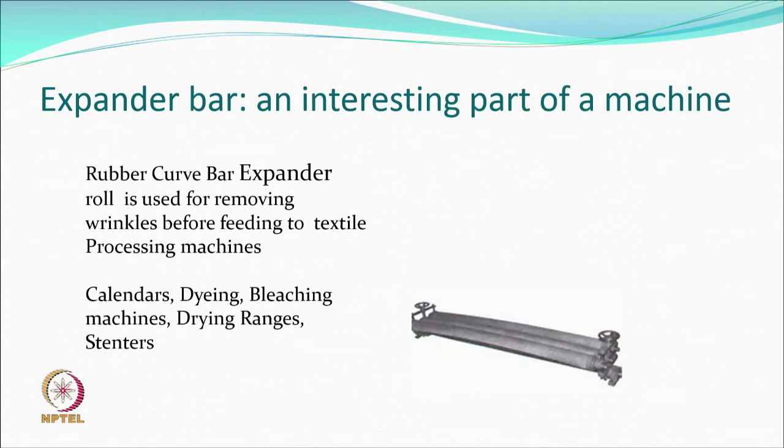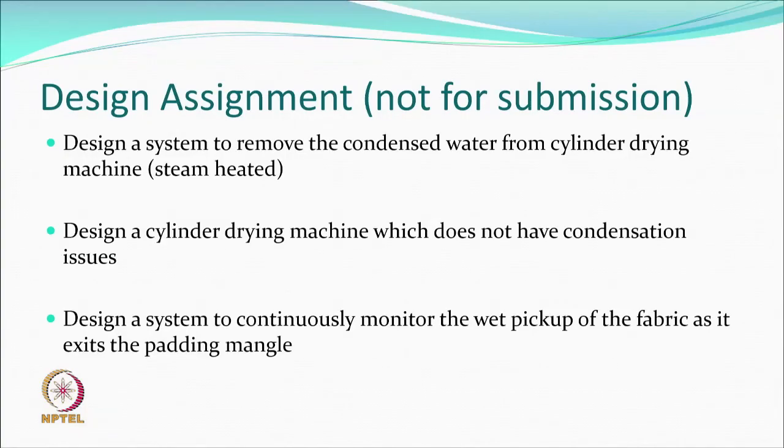The expander bar rotates but on a curved axis — find out how this works. As a design exercise: design a system to remove condensed water from a cylinder drying machine efficiently. Also think about designing a cylinder drying machine that has no condensation issues at all. Additionally, consider designing a continuous moisture monitoring sensor for fabric — as the fabric goes in and comes out, sensors measure moisture and adjust speed and temperature accordingly.